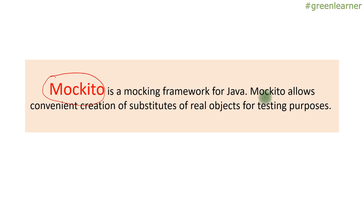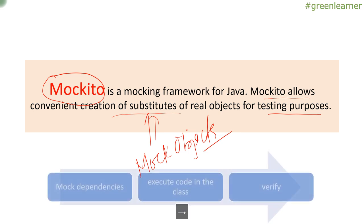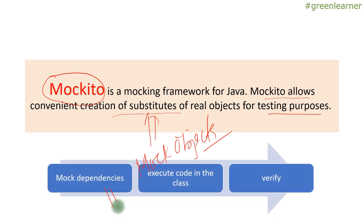Coming to Mockito — Mockito is a Java library and a mocking framework for Java. Mockito allows the convenient creation of substitutes for real objects for testing purposes; these substitutes are the mock objects. You add mock dependencies, execute the code in the classes, and verify the behavior — setting the expectation and comparing it with the actual result to mark test cases as pass or fail.